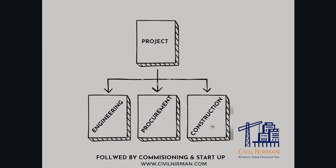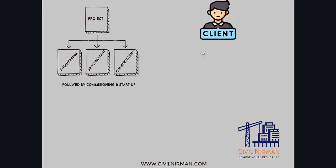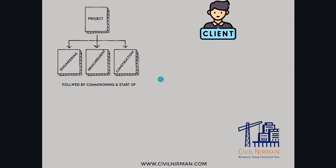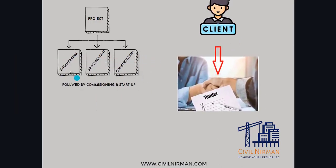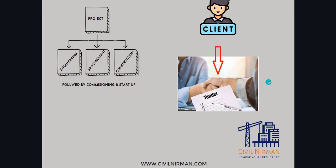Let's understand this through an example. Let's say we have Client A, or Owner A, who is investing money to develop a particular industrial plant. In order to construct this plant, they go through all three phases — estimation, engineering, procurement, and construction. They will float a tender, and companies working in this space will bid for it. Based on the lowest bid, they hire a particular company to complete the engineering part.